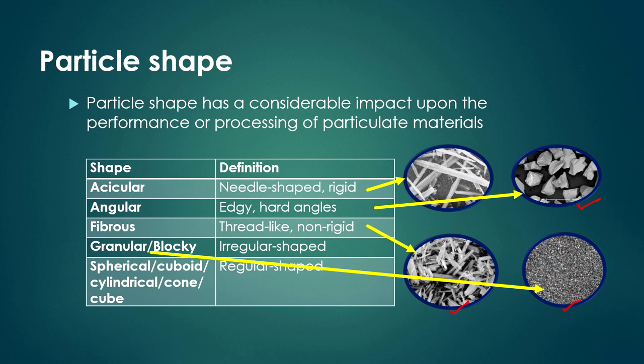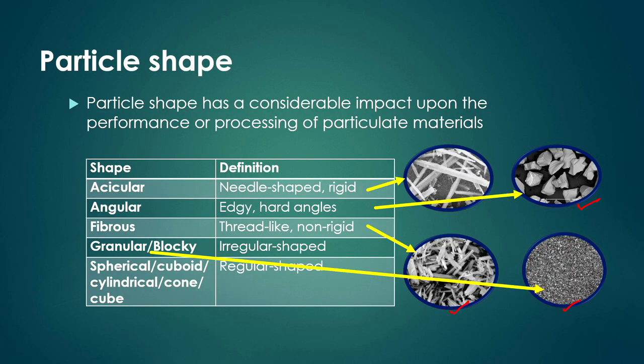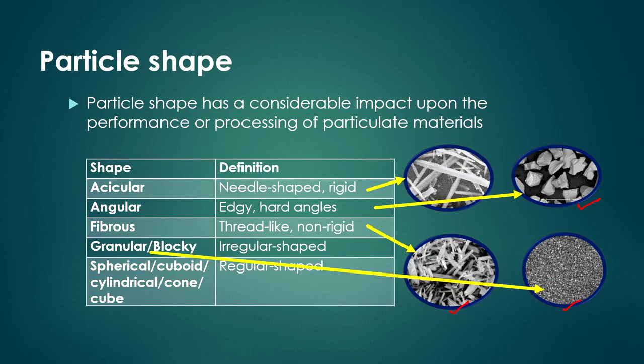Regular-shaped particles are used to assess processes ideally, but most catalyst particles used in real processes are not regular in shape. Irregular-shaped granular materials are used with a certain distribution of particle sizes. Within a certain range of particles, a mean of the size distribution is considered for assessment.